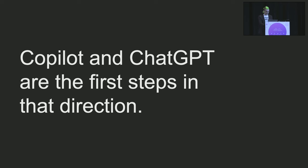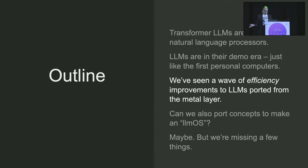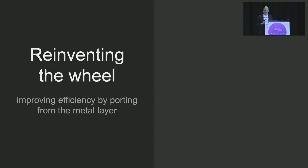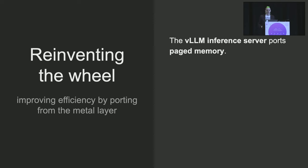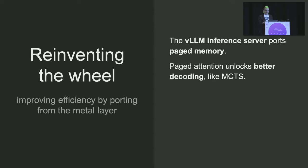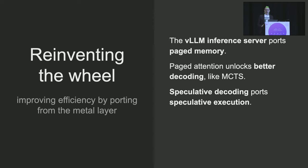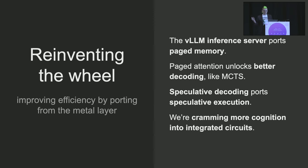There's also the opportunity to use this analogy of Transformer elements as a new computer to take things we've used to make computers more efficient and just port them over. There's been a number of wheel reinventions in the last year that are very exciting. The vLLM inference server ports the idea of paged memory, and this doesn't only make the thing a lot more efficient — the manner in which it makes it more efficient unlocks actually smarter models like Monte Carlo Tree Search-based models. Speculative decoding ports the idea of speculative execution over to language models and improves their efficiency.